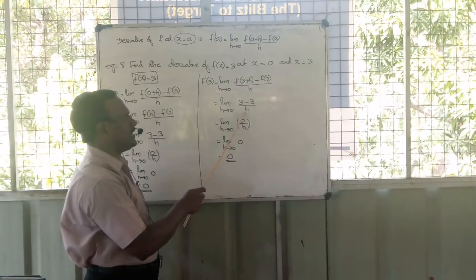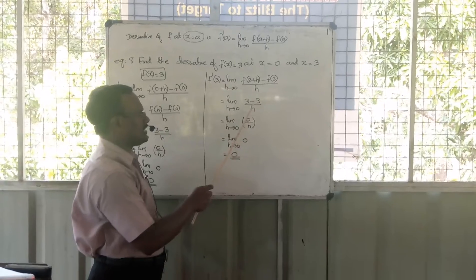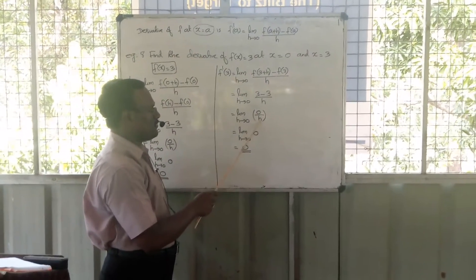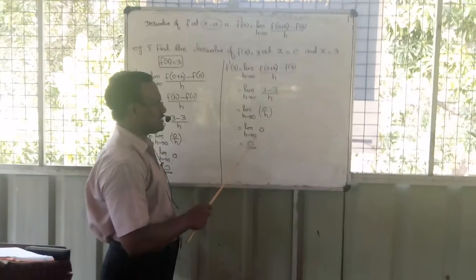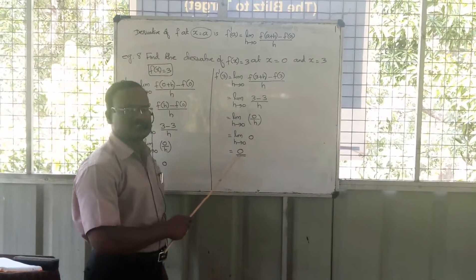By h equals limit h tends to 0, 3 - 3, which is 0 by h, equals limit h tends to 0, 0. So the answer is 0.